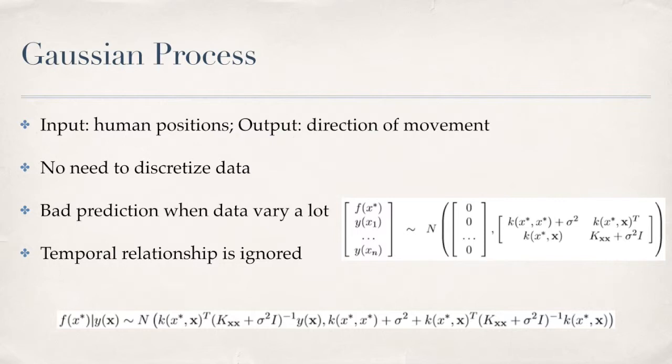We do this by first estimating the direction of movement at each observed positions of the humans in the training recordings. Then, we fit a Gaussian process model.